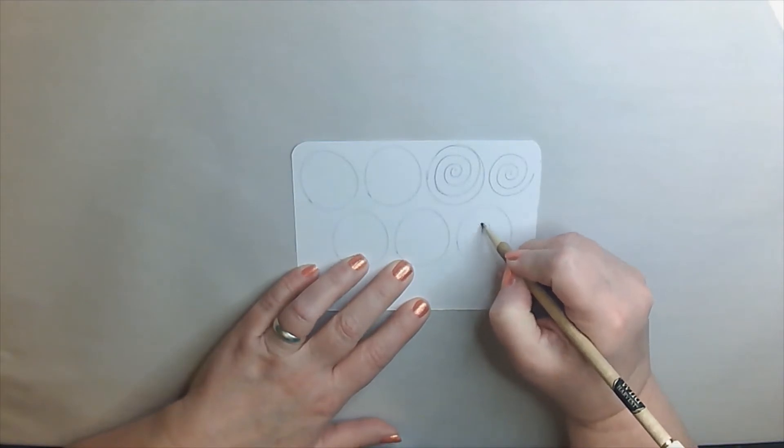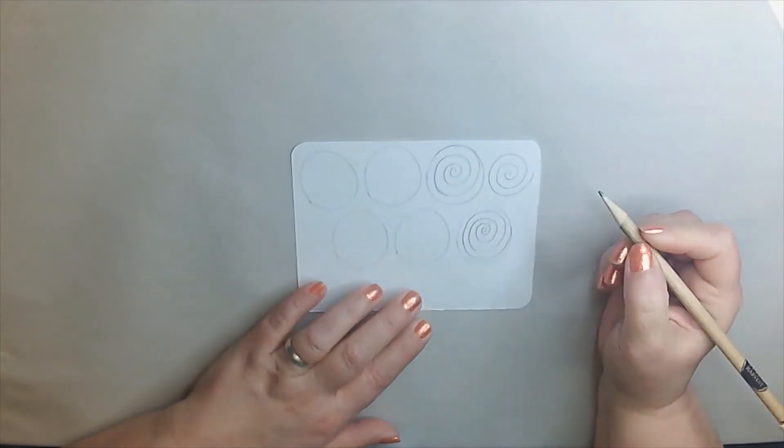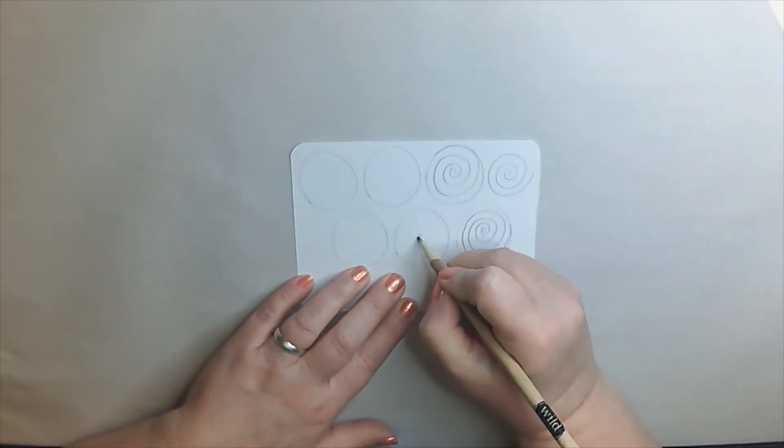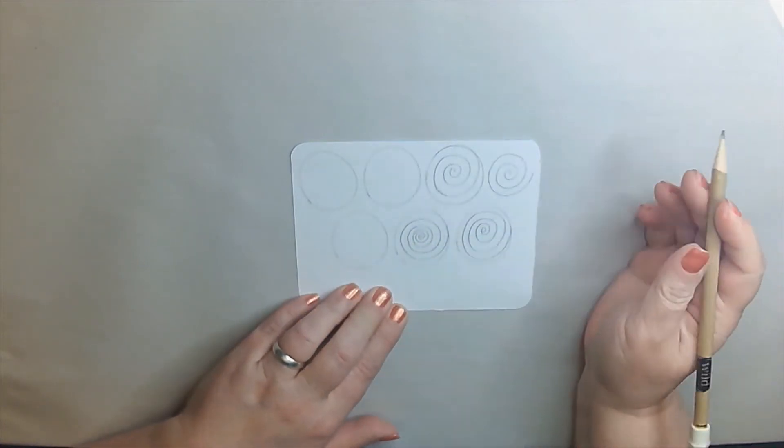Once you've done a couple of those circles, you can add more lines in. You can even start super small. Work your way out. Take your time if you want. Go bigger until you hit the edge of the circle and just stop.